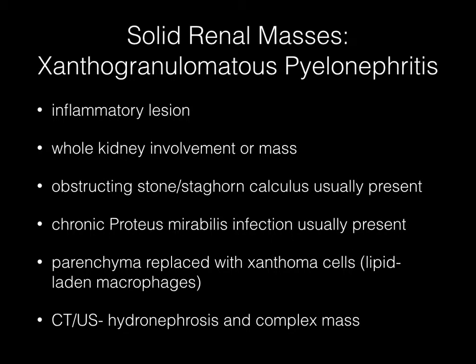The final solid renal mass is xanthogranulomatous pyelonephritis, an inflammatory lesion which can involve the entire kidney or present as a mass. An obstructing stone or staghorn calculus is usually present, and chronic Proteus infection is also usually present. The parenchyma becomes replaced with xanthoma cells, and CT and ultrasound demonstrate hydronephrosis and a complex mass.